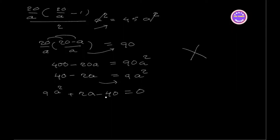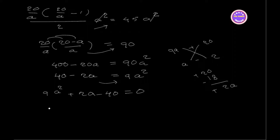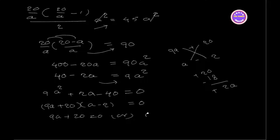So 90e squared equals 0, and simplifying: minus a plus 20 equal to 0, or a minus 2 equal to 0. Therefore a equals minus 20 by 9, or a equals 2.